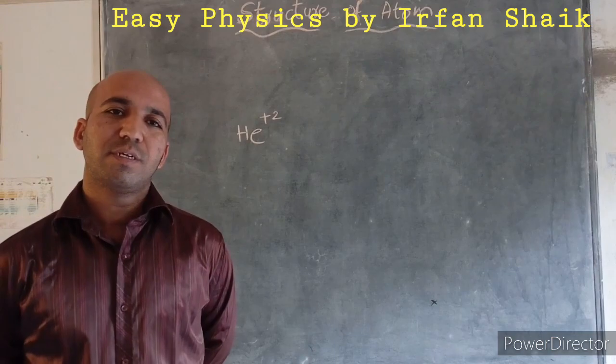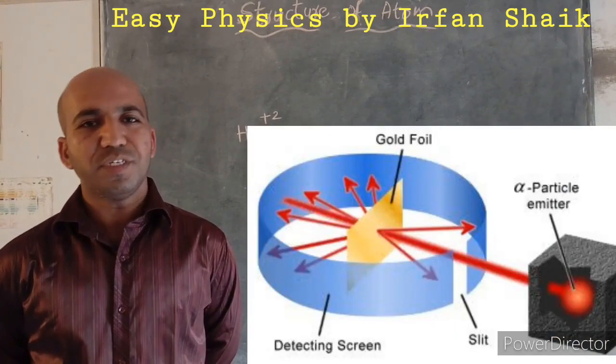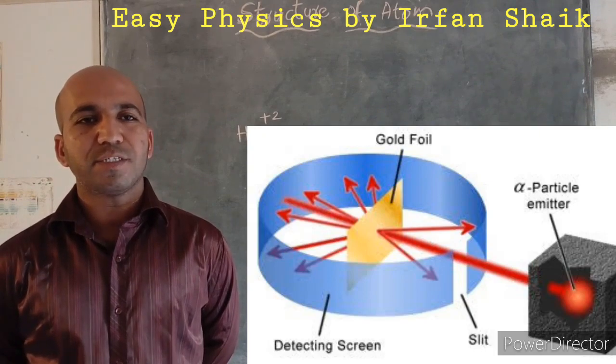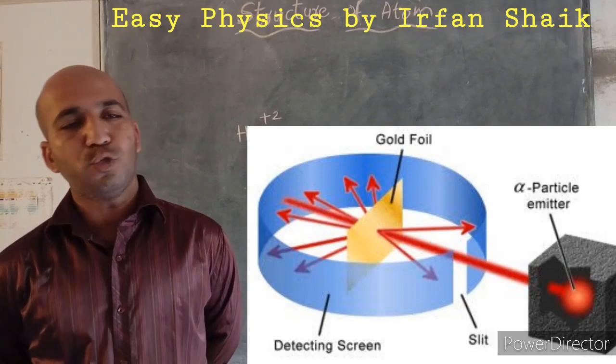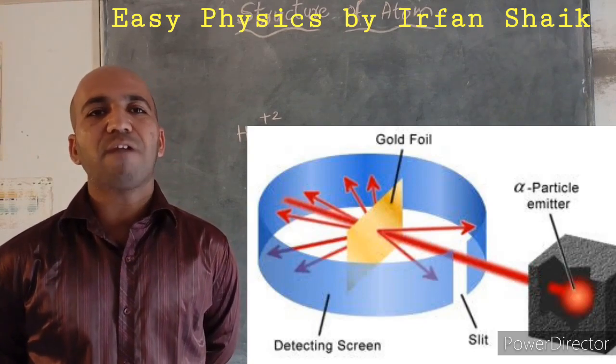What he has done? He has took a gold foil and he has sent some alpha particles through the gold foil. So what is an alpha-ray? What is an alpha particle?